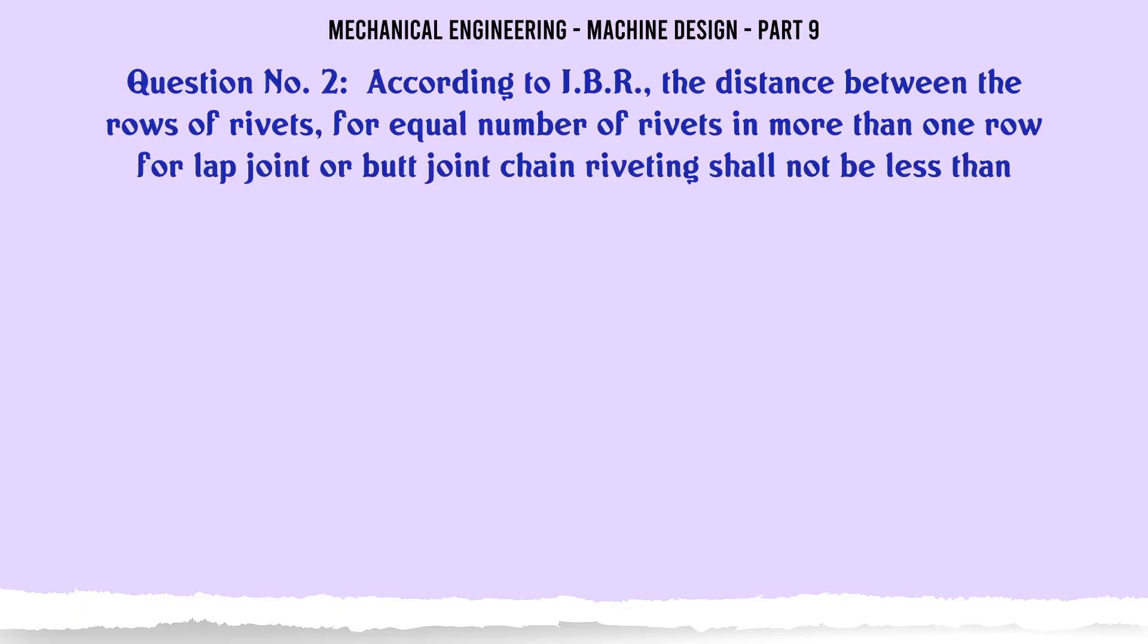According to IBR, the distance between the rows of rivets for equal number of rivets in more than one row for lap joint or butt joint chain riveting shall not be less than: A. d, B. 1.5d, C. 2d, D. 2.5d. The correct answer is 2d.